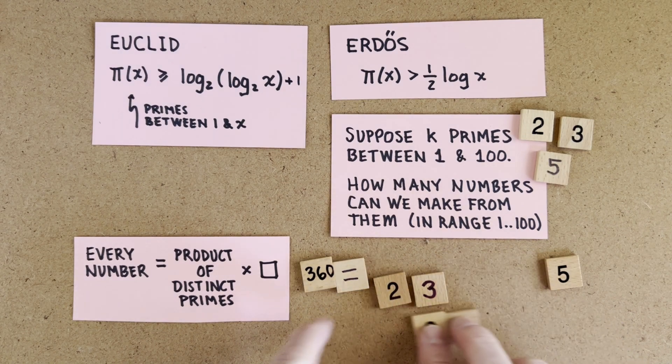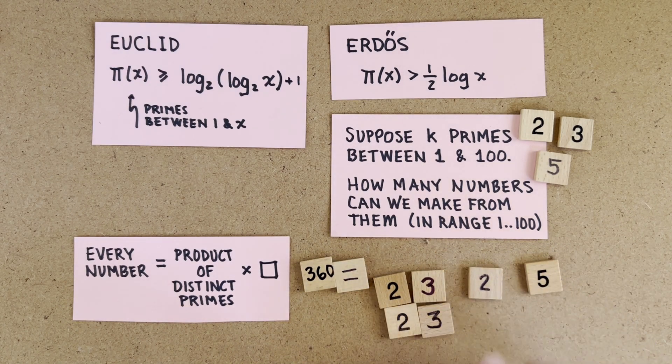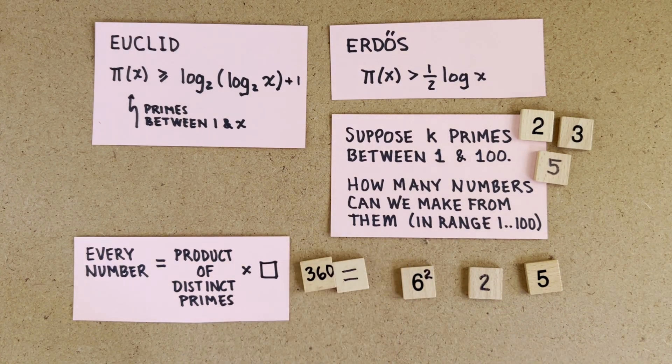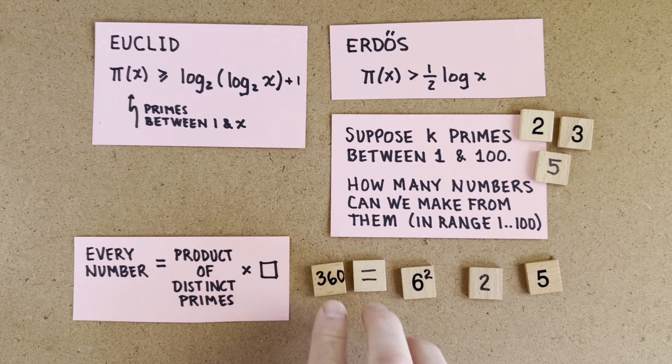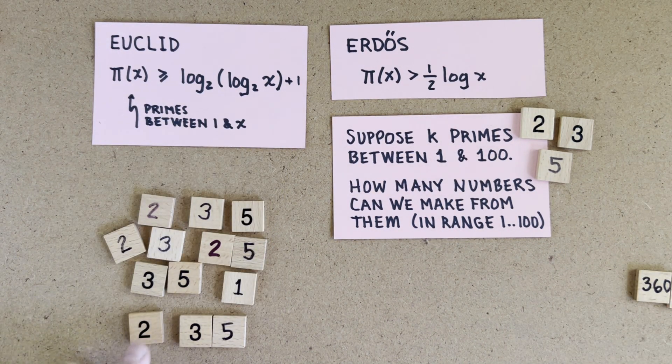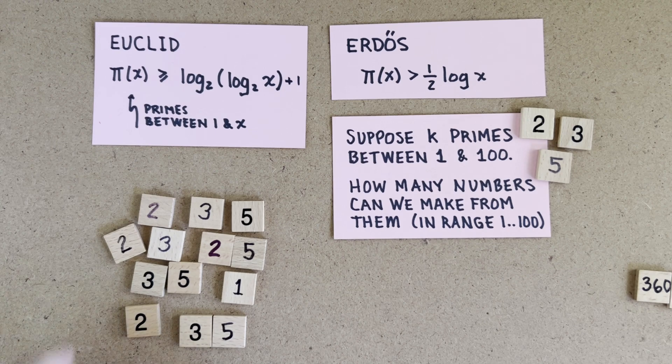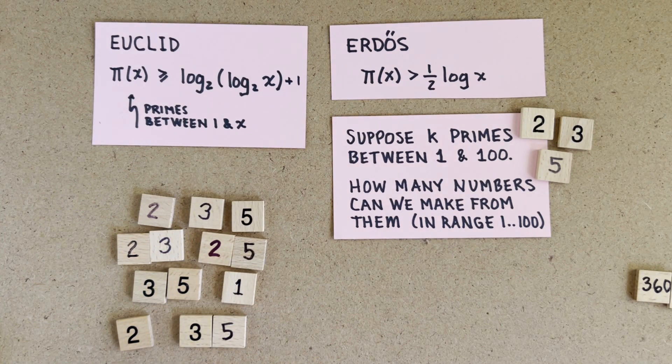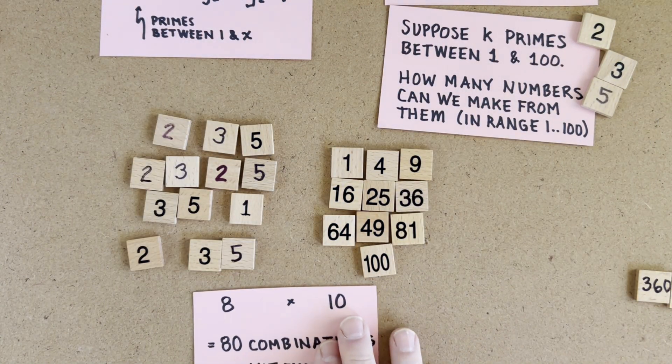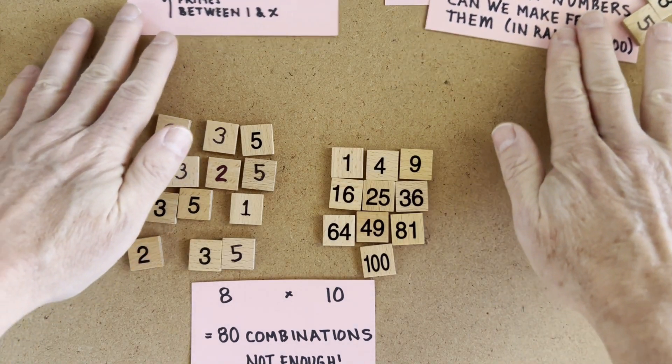For example, 360, which can be rearranged as 2 times 5 times 6 squared. Using our k primes, there are 2 to the k ways to make products out of them. Now the squares are infinite, but only squares up to 10 are useful if we want to construct numbers from 1 to 100. So we have 2 to the k times 10 total ways to construct a number. And here are some of them.